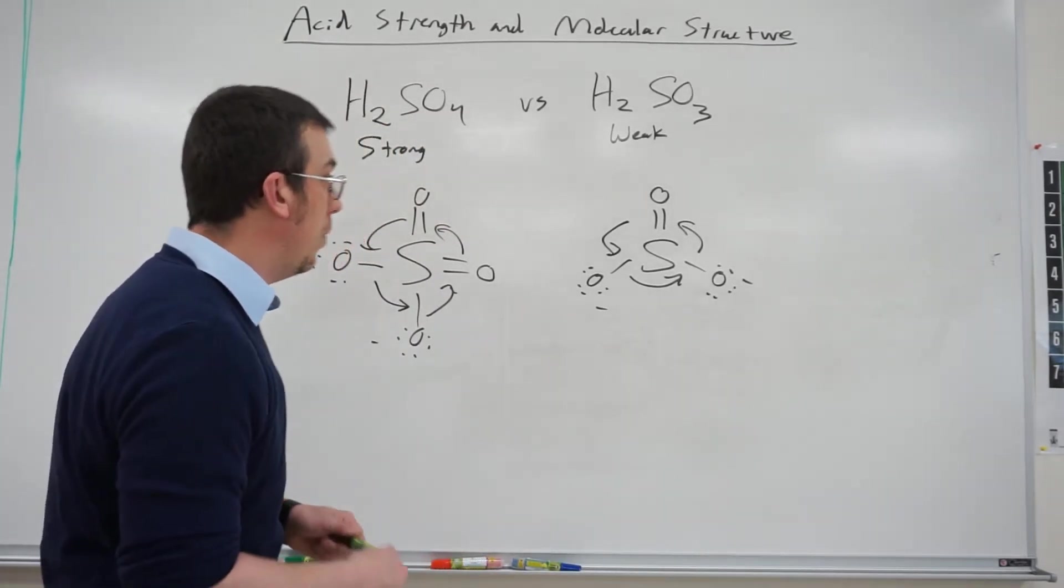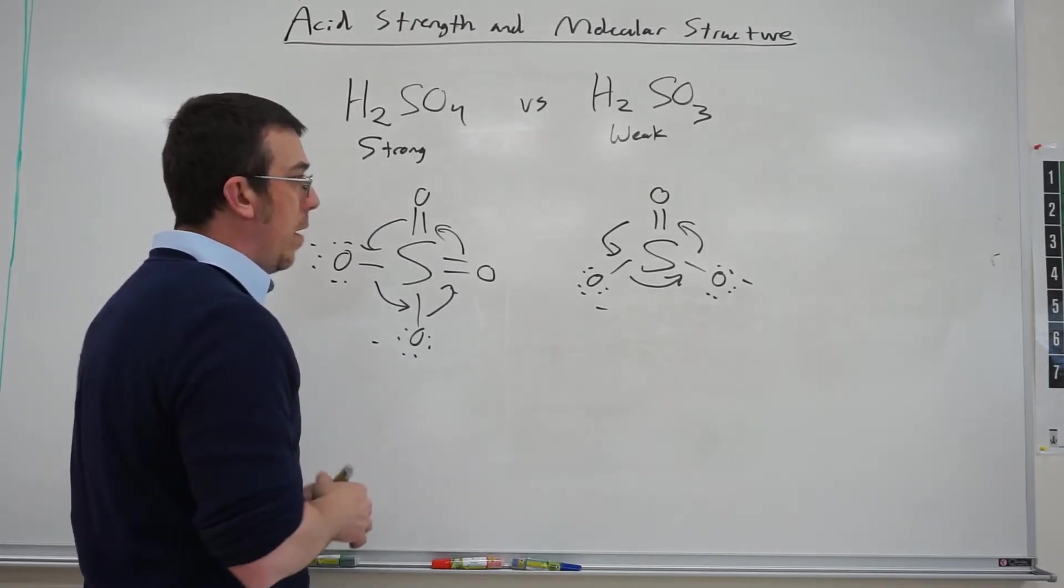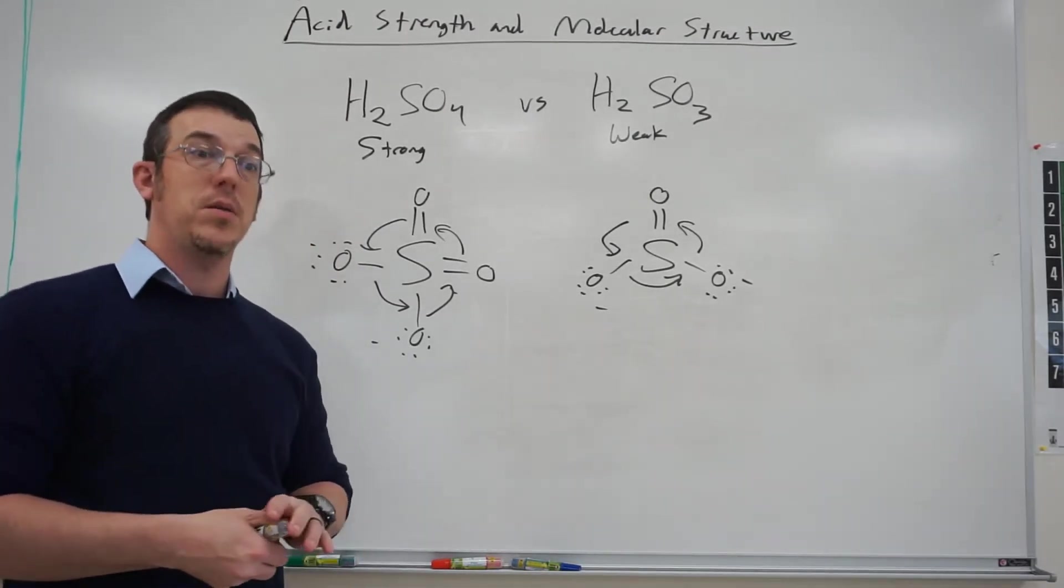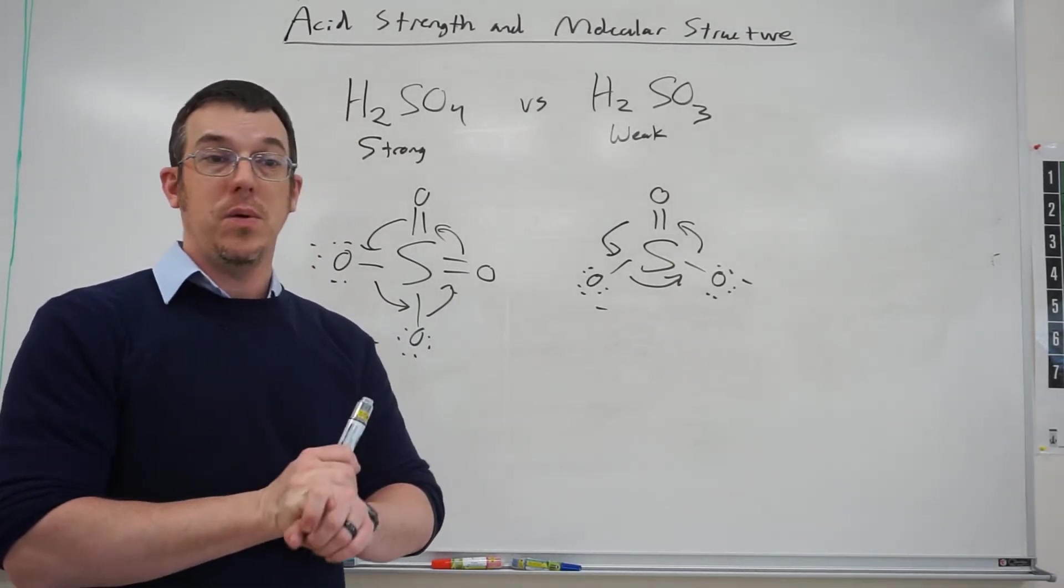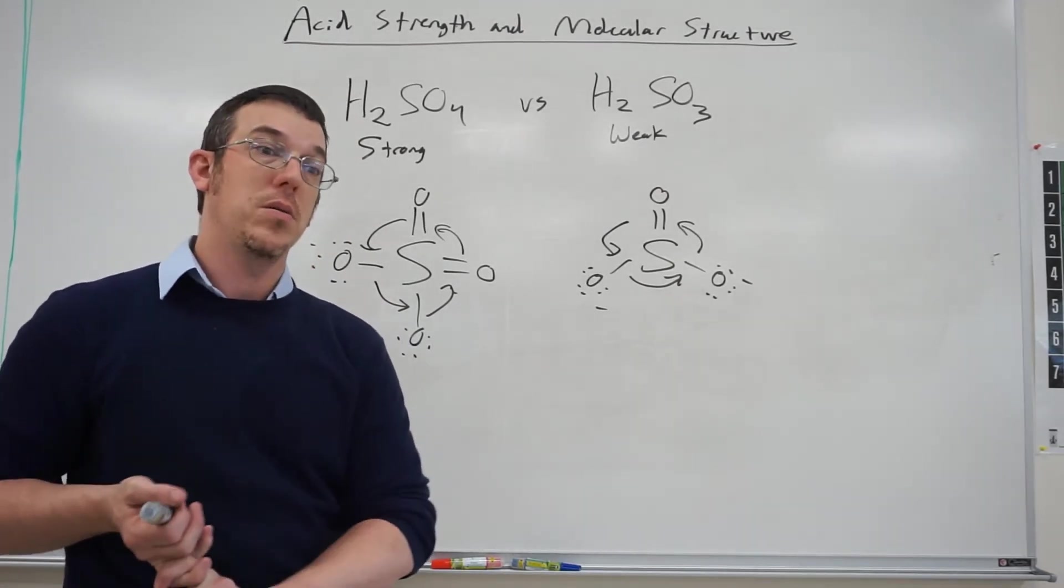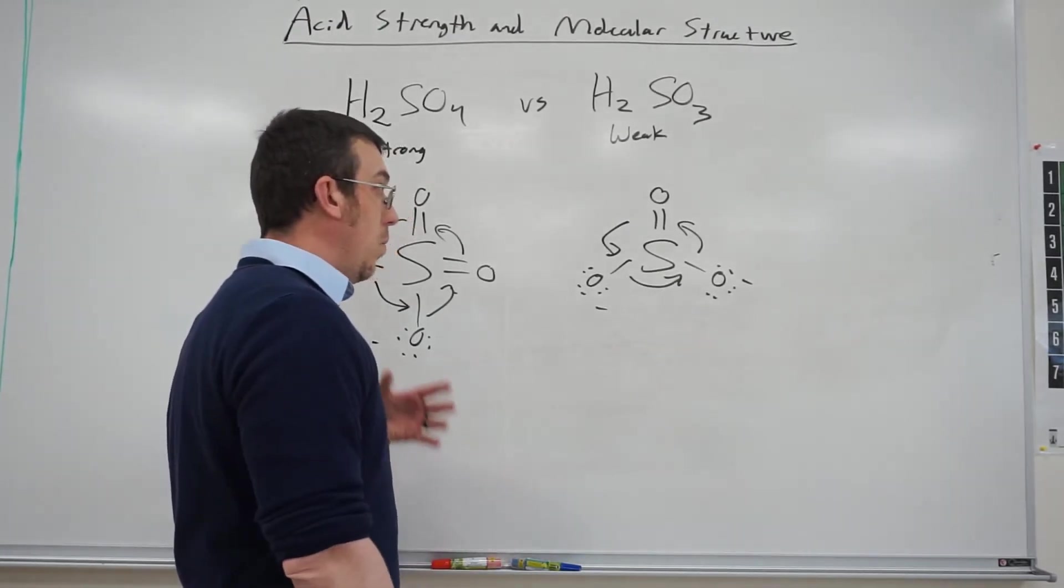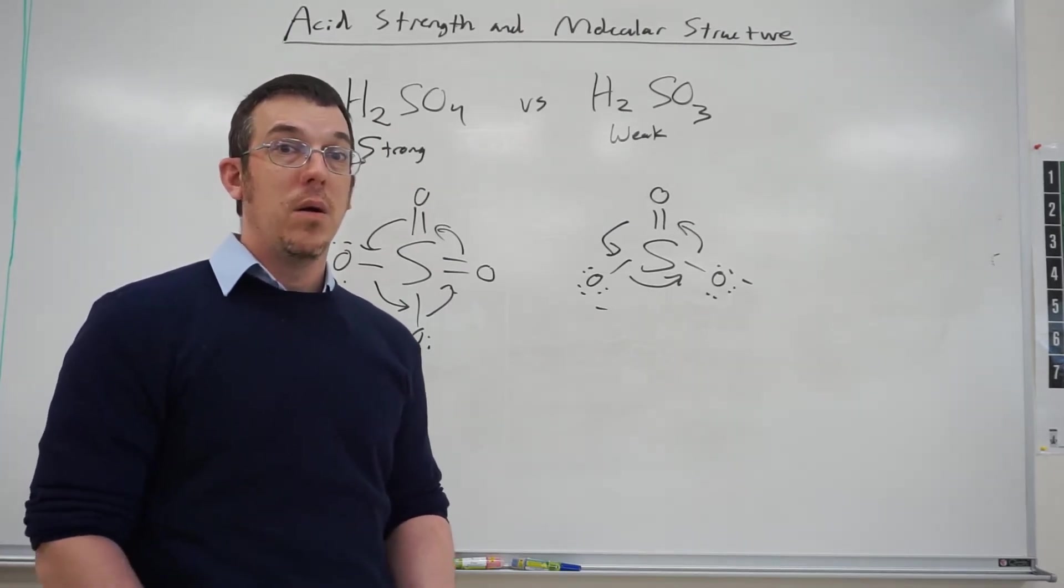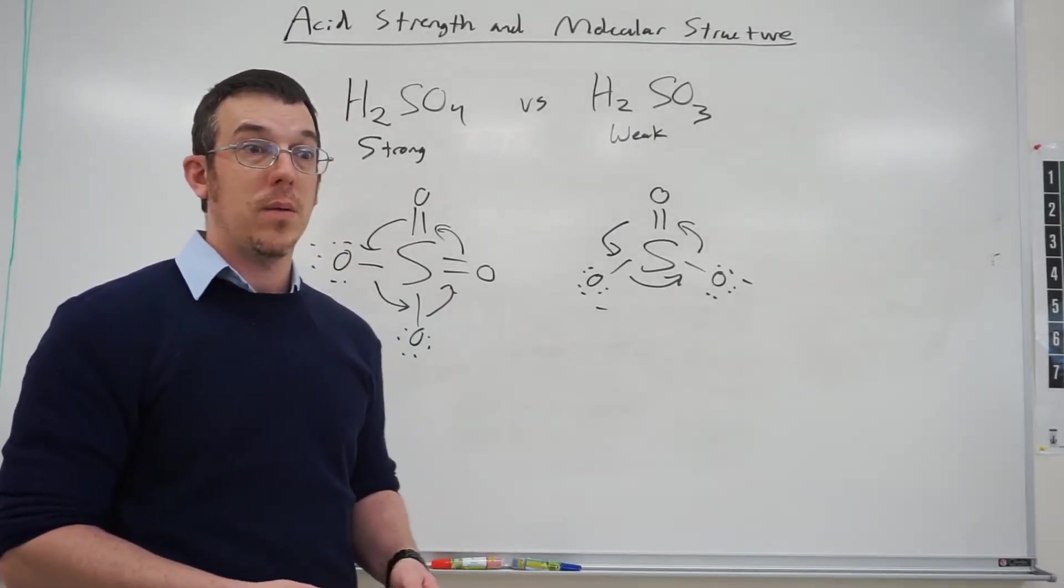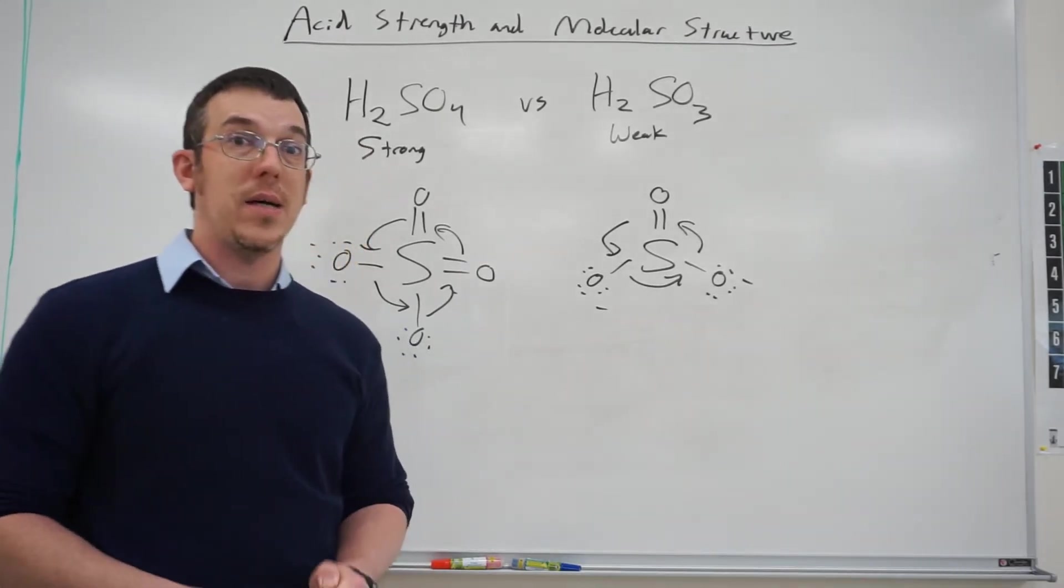And so when we talk about acid strength, we have to pay attention to the polyatomic ion that's associated with it, how many resonance structures it has. So the rule of thumb here to remember is that the more resonance structures you have, the more stable that polyatomic ion is, and the stronger the acid it will be.